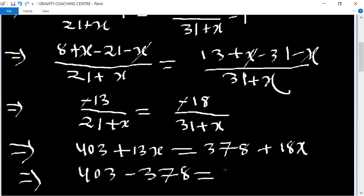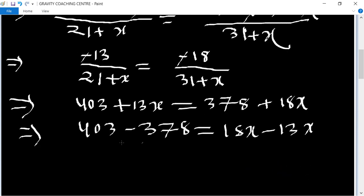Therefore 403 minus 378 equals 18x minus 13x, which gives 25 equals 5x, so x equals 25 upon 5.